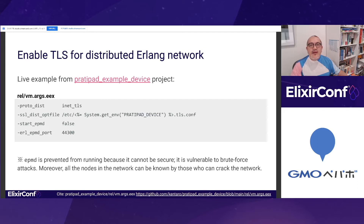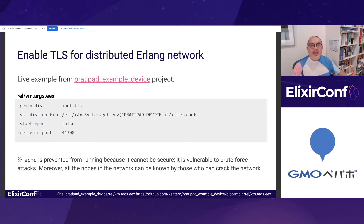We enable TLS for distributed Erlang networks. The settings of the PROTO_DIST and SSL_DIST_OPTFILE are important. This example is taken from an example device implementation using Nerves and Platypad. To pass some extra arguments to the Erlang VM, you can add them into the vm.args file. You can also pass them as command line arguments. It's also important to prevent EPMD from running because it can't be secure.